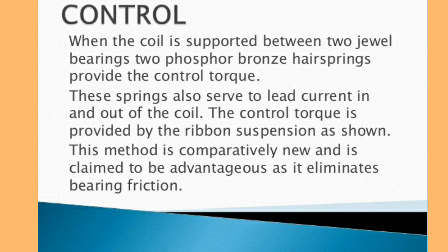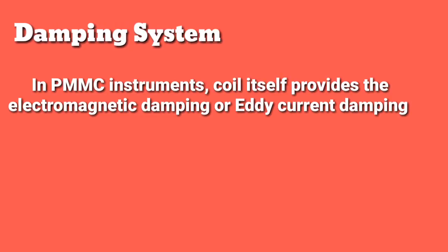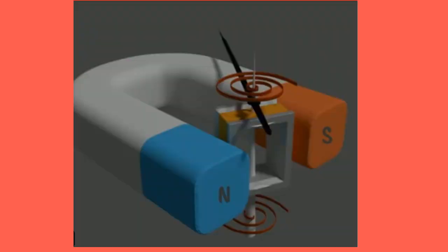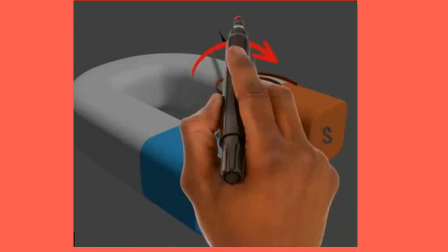Every instrument requires a deflecting torque, a controlling torque, and a damping torque. The deflecting torque is produced in the coil, the controlling torque is produced by the controlling spring, and the damping system reduces oscillation. The damping torque keeps the movement of the coil at rest, and it is induced because of the movement of the aluminum core moving between the poles of the permanent magnet.